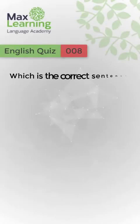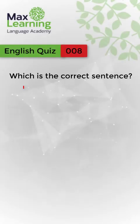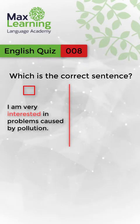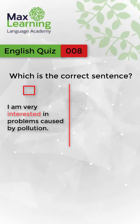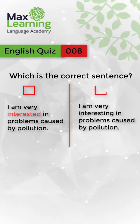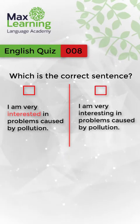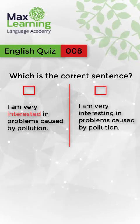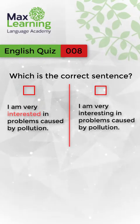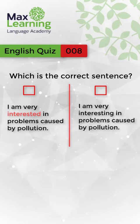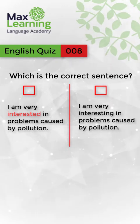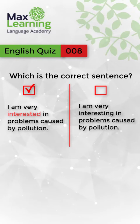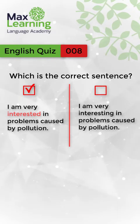Which is the correct sentence? Option A: I'm very interested about problems caused by pollution. Option B: I'm very interested in problems caused by pollution. I'll give you some time to think. The correct answer is: I'm very interested in problems caused by pollution.